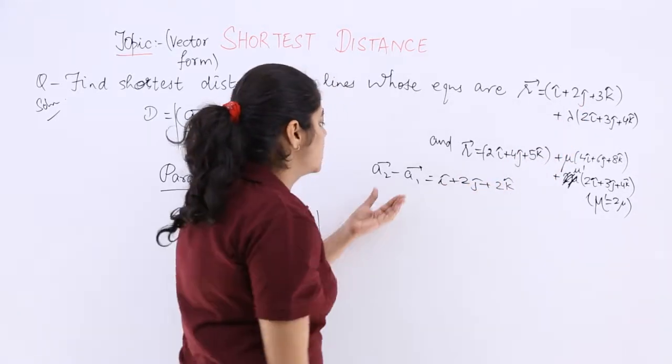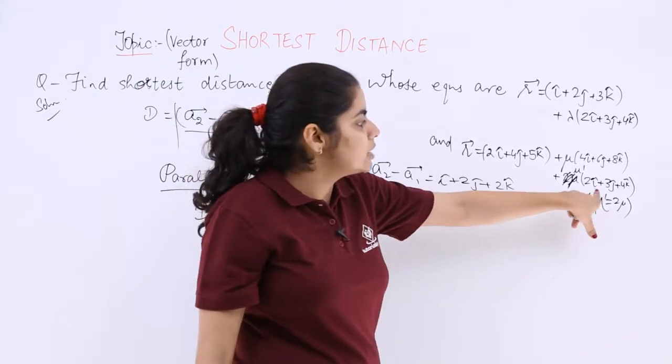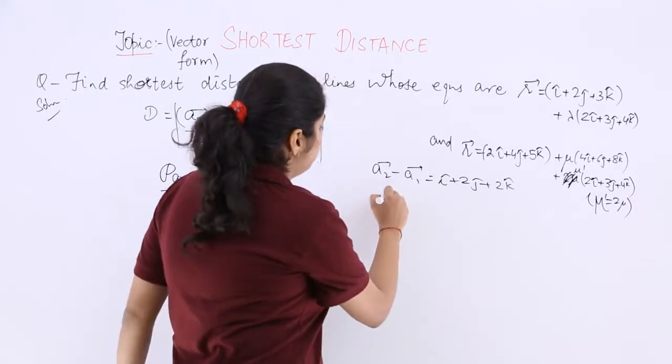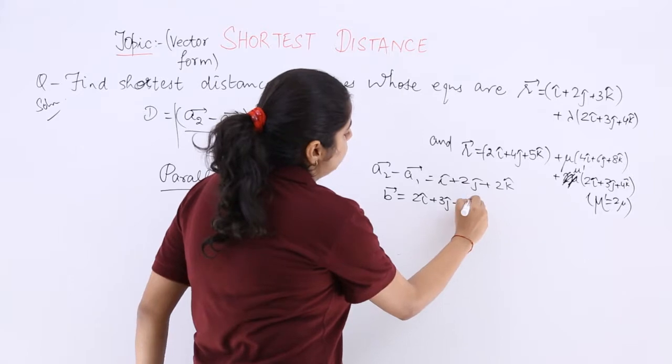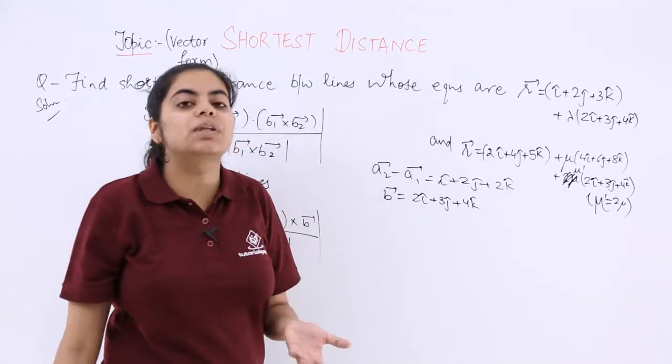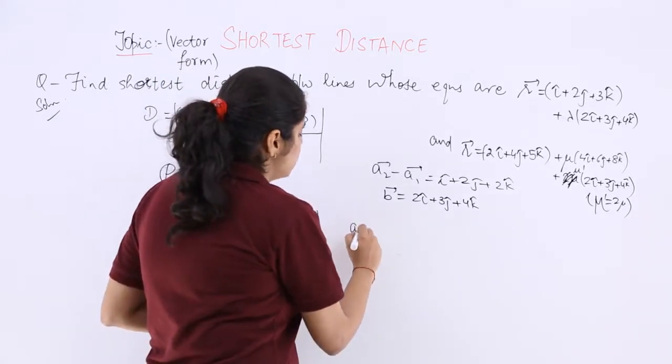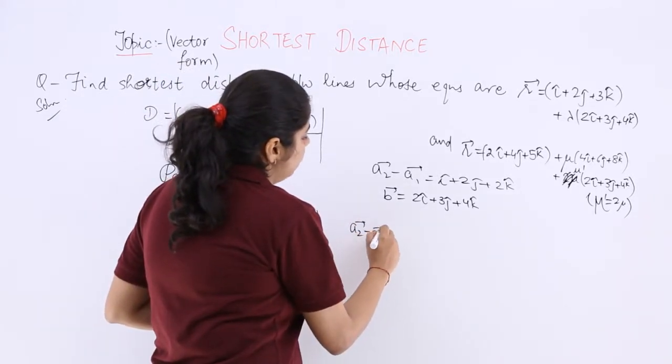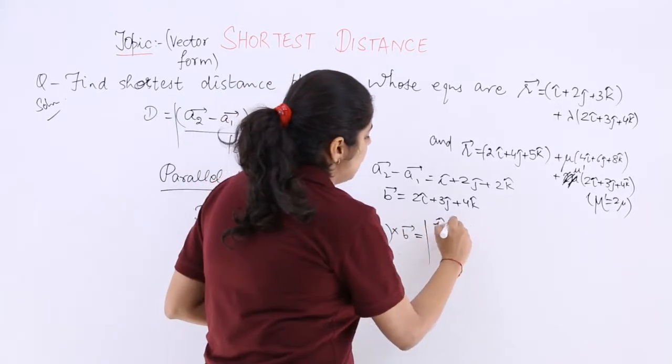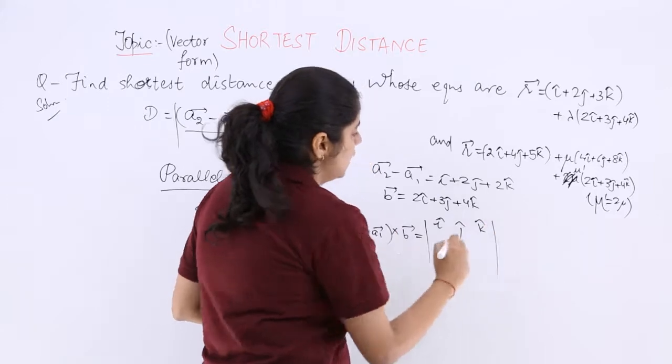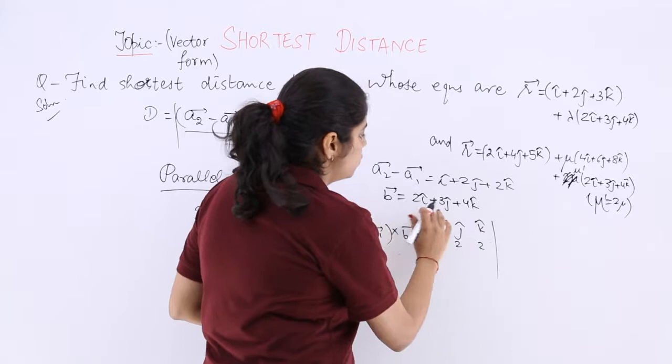So A2-A1 cross B. This is your B vector, 2i cap plus 3j cap plus 4k cap. Now you know the cross product can be taken very easily with the help of determinant form. So A2-A1 cross B, I write: First I have to write i, j, k, and then I have to write the coefficients. So 1, 2, 2 and 2, 3, 4.